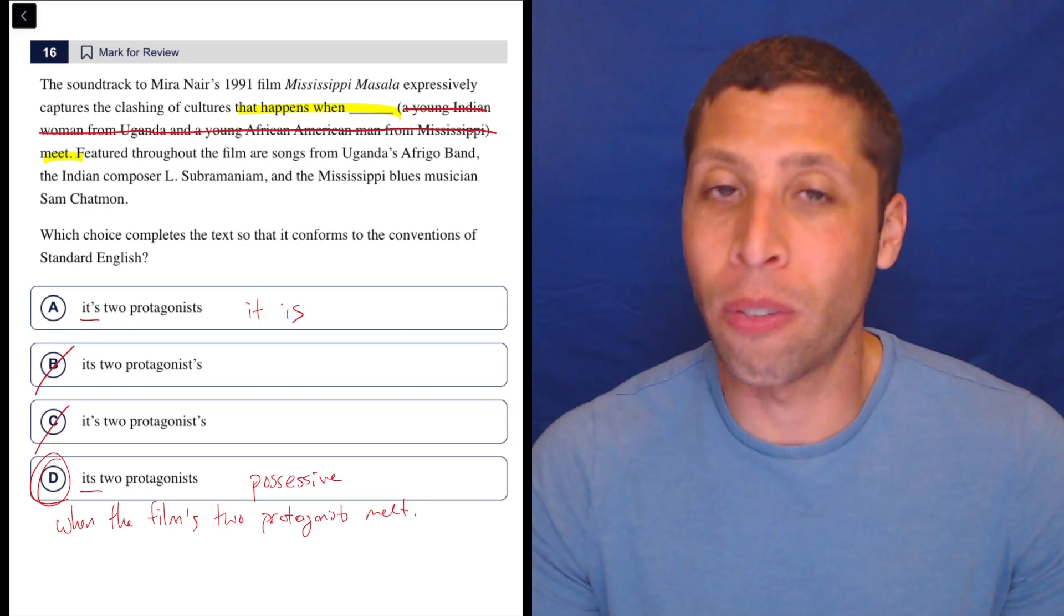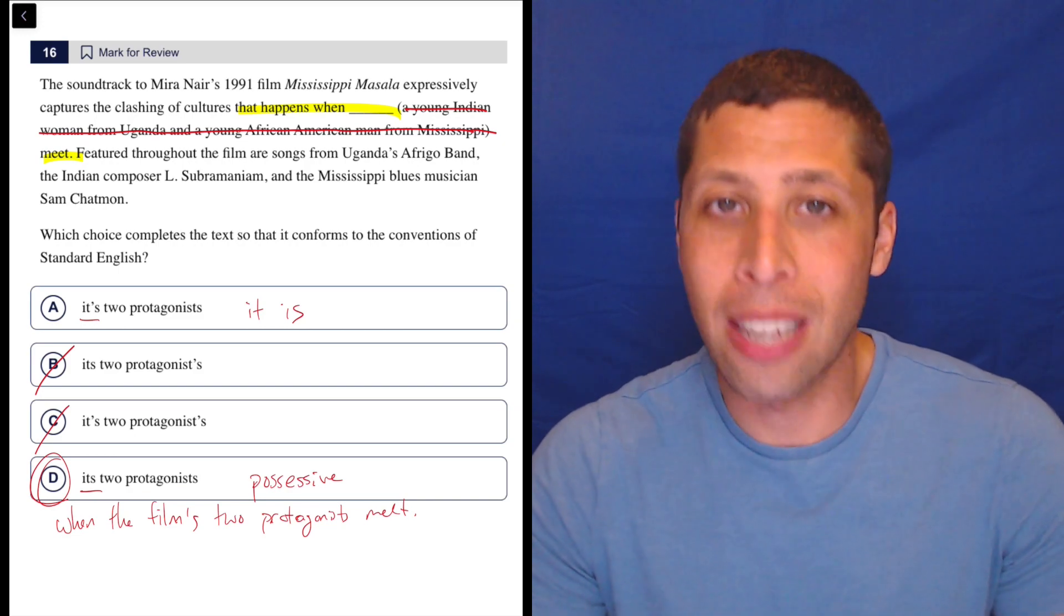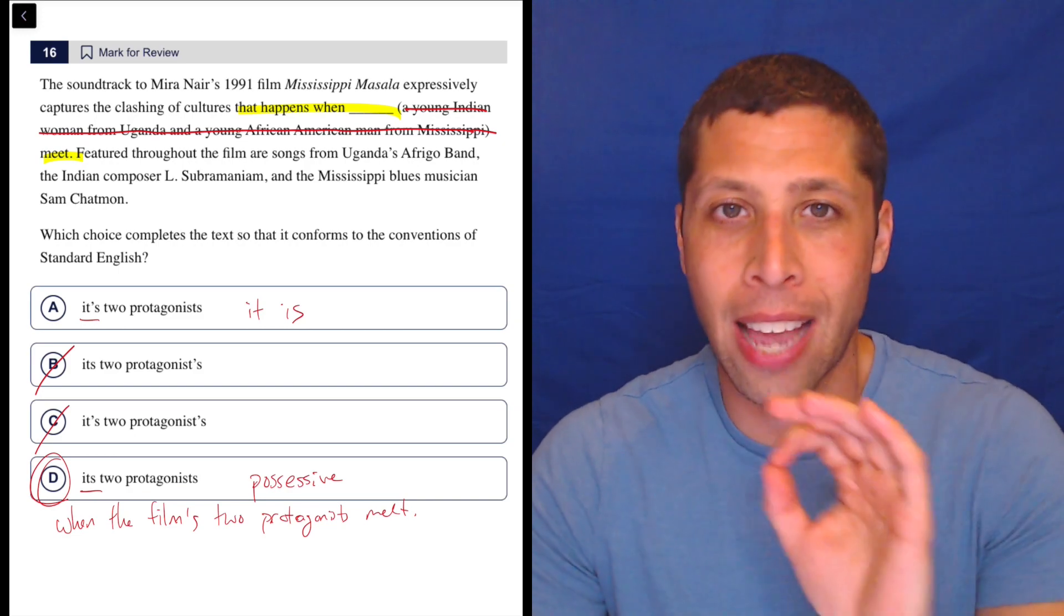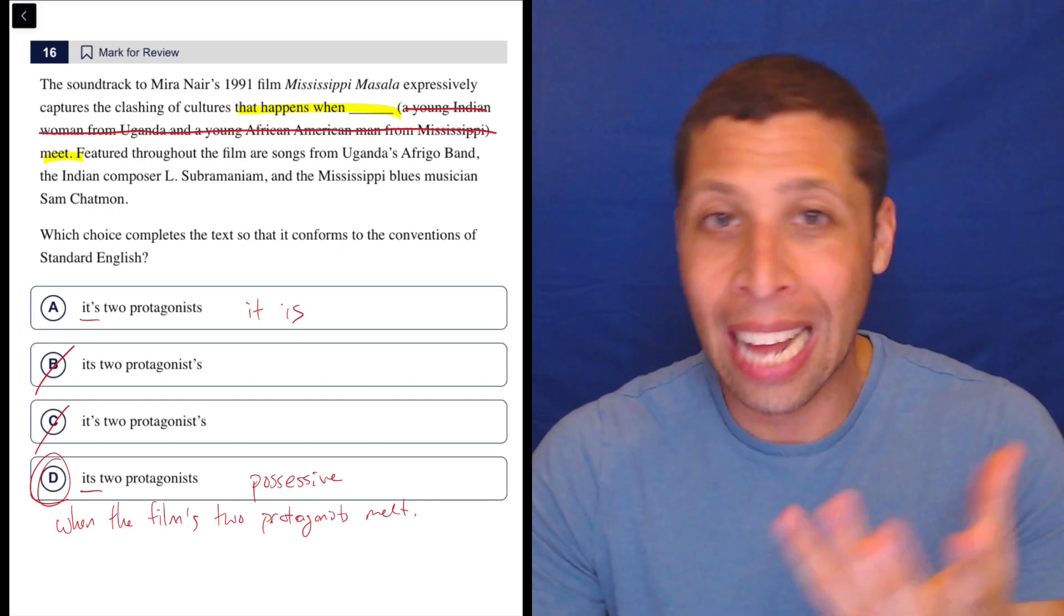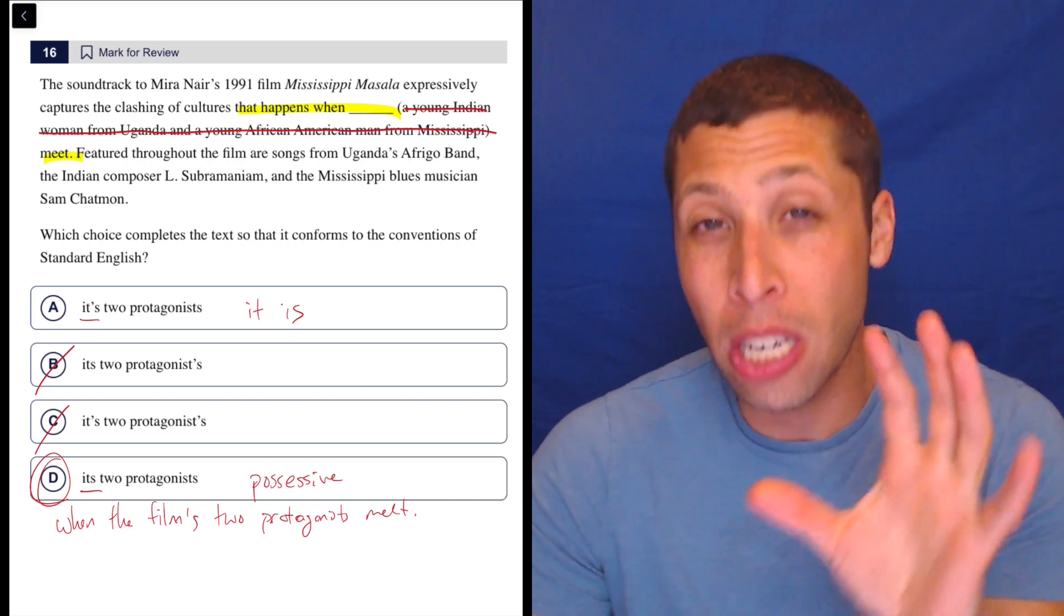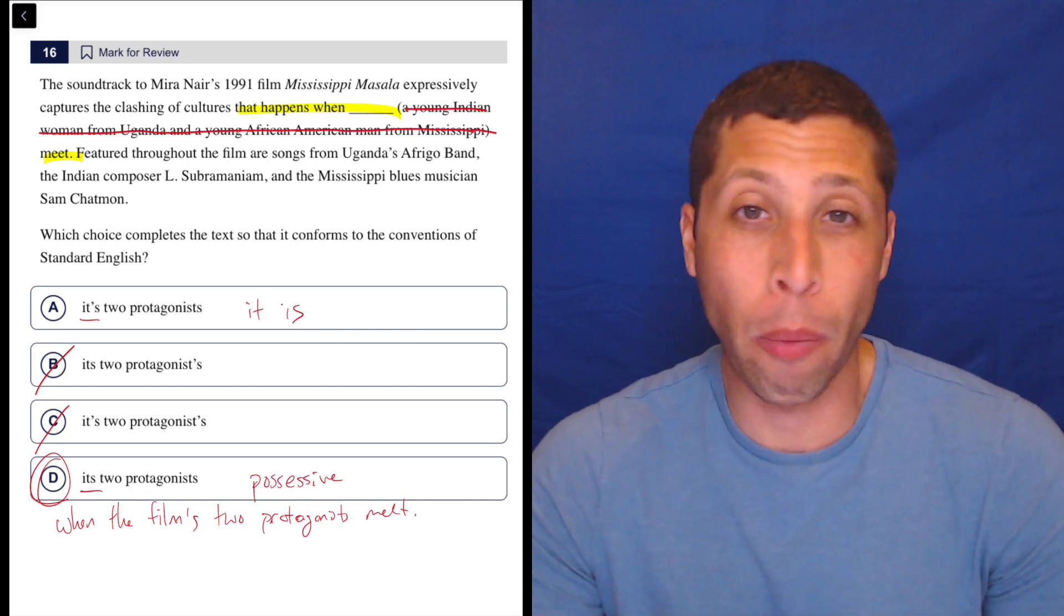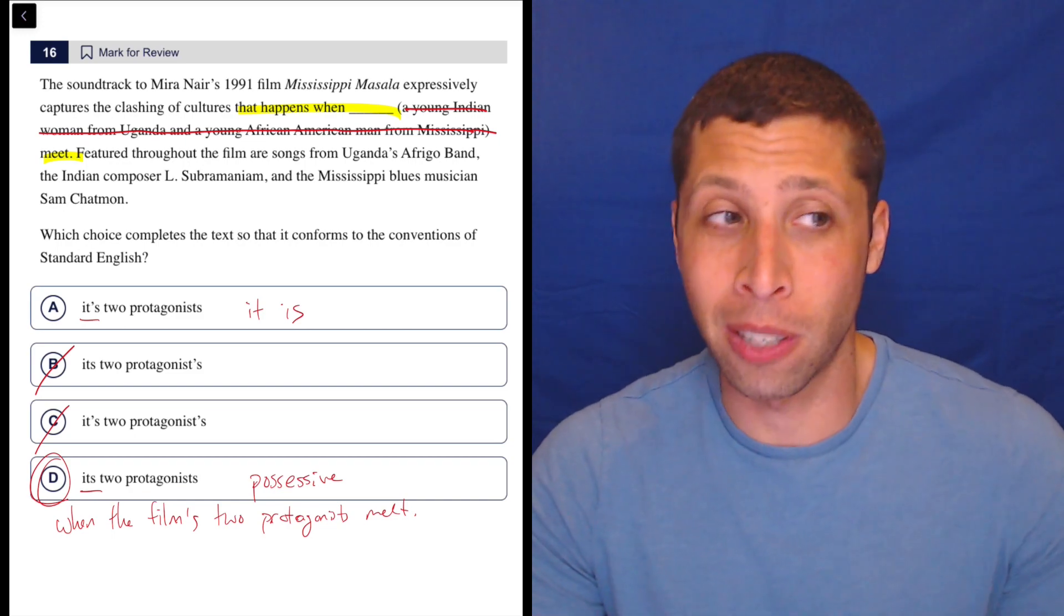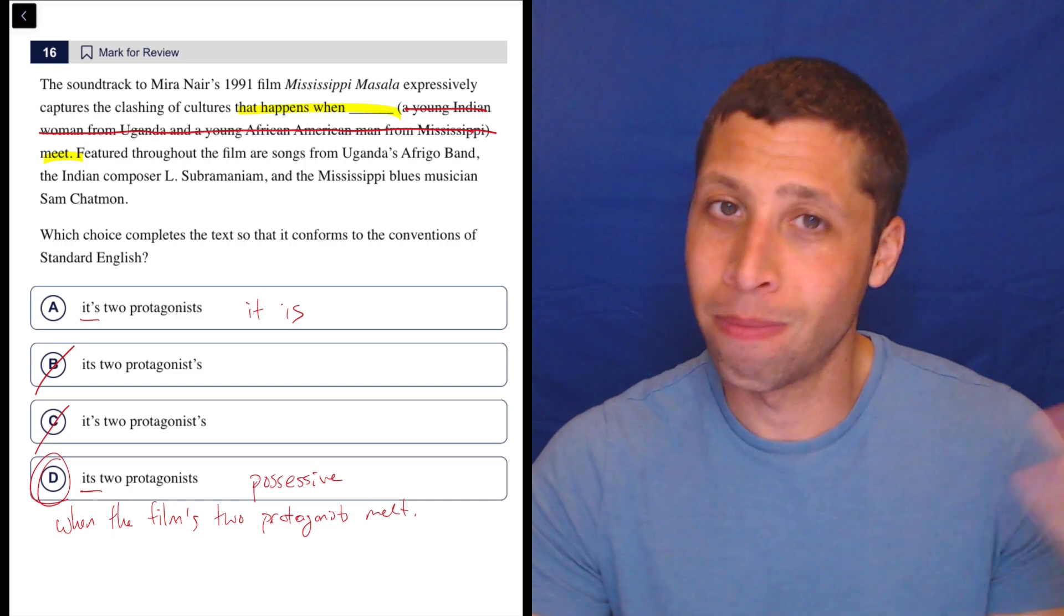Apostrophes are weird and annoying, but they're very consistent on the SAT. So you definitely got to know the differences between the word its and it's with an apostrophe. And then it's not usually where the apostrophes go on words. It's much more about whether we need them at all. And for most words, they show possession. No possession, no apostrophe.